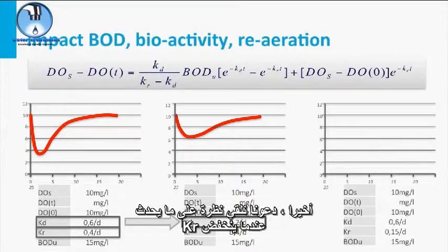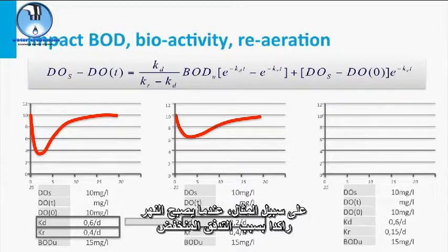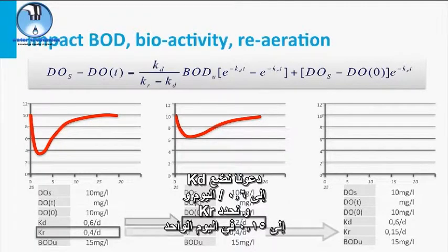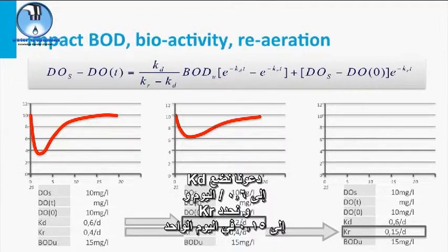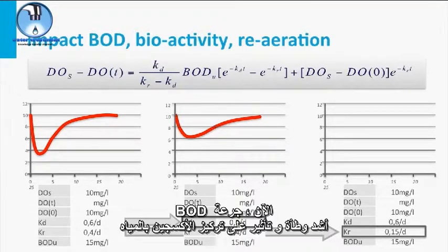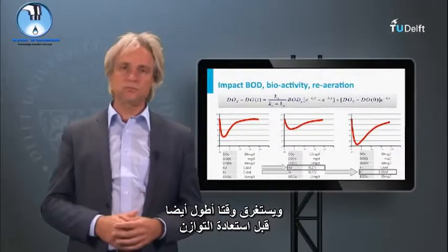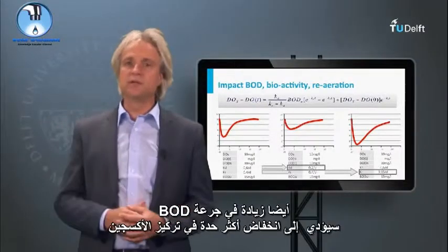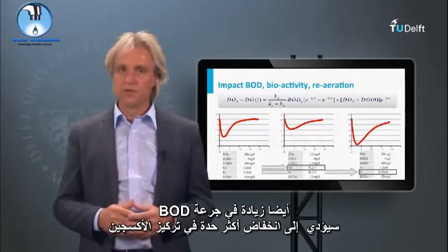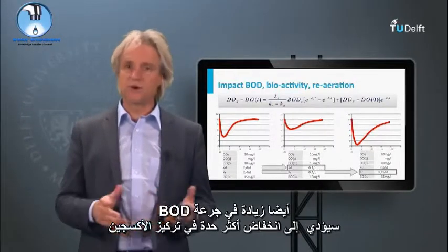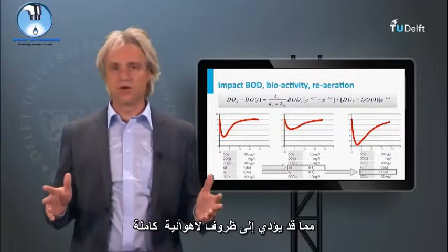Finally, let's look at what happens when the Kr drops, for instance when the river becomes more stagnant due to low flow. Setting the Kd back to 0.6 per day and the Kr to 0.15 per day, the BOD dosage has a much more severe effect on the water oxygen concentration, and it takes much longer before equilibrium is restored. Also, an increase in the BOD dosage will lead to a more severe drop in oxygen concentration, possibly leading to complete anaerobic conditions.